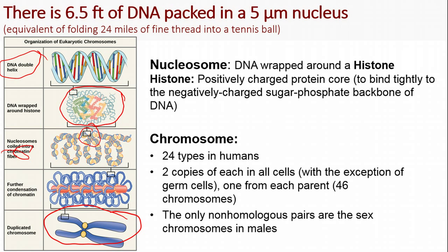We have 24 types of chromosomes and two copies of each, except in germ cells which only have one copy, for a total of 46 chromosomes. Our chromosomes are duplicates of each other, except in males, who have an X and a Y chromosome instead of two X chromosomes as females do.